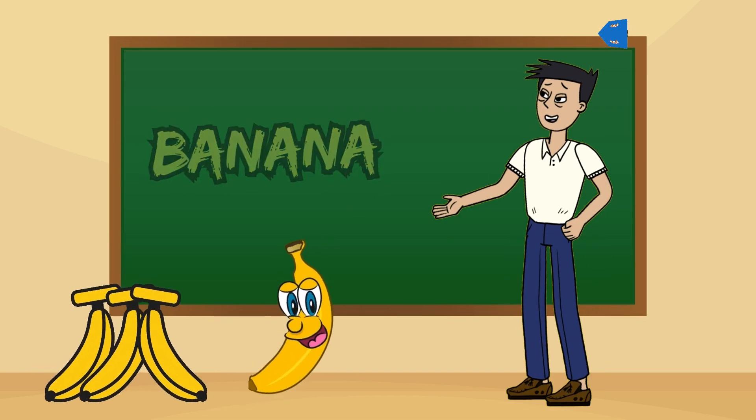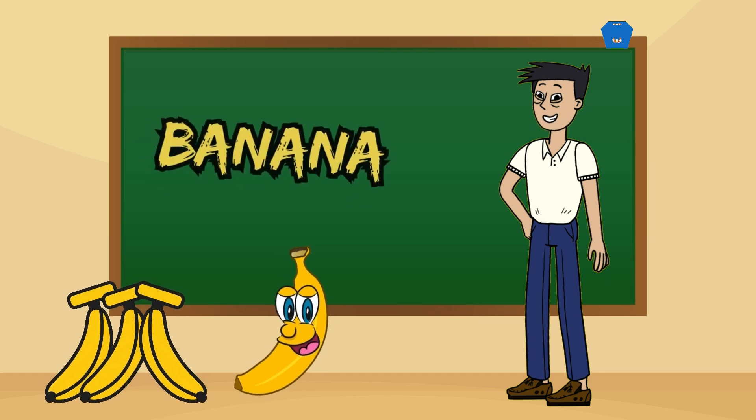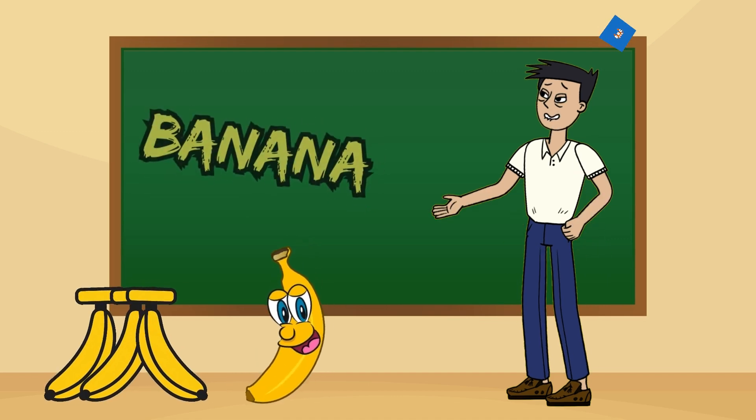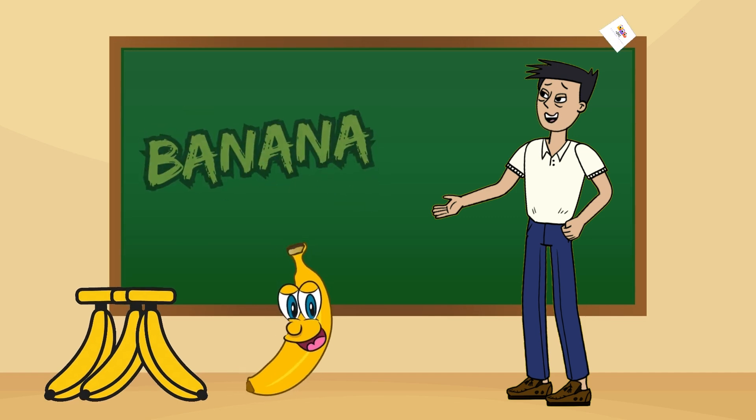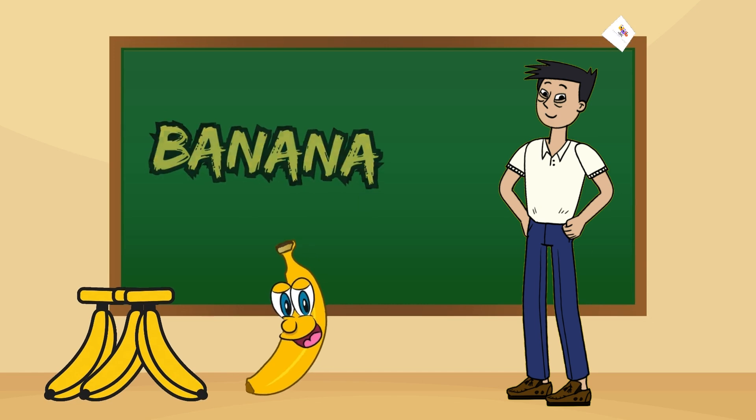Banana. Bananas are nature's energy bars. They are high in potassium and great for your muscles. Grab one of them for quick snack or slice it into your cereals. So, do you like bananas? I like bananas.